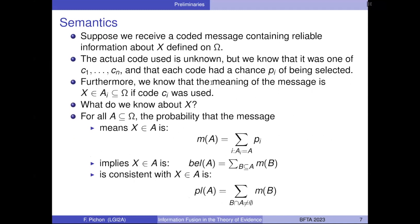Here is the semantics that Shafer gave in general to mass functions. Mass functions are obtained by fitting evidence to canonical examples of this form: suppose we receive a coded message telling some information about variable X in omega. The actual code used is unknown, but we know it was one of C1 to CN, that each code has a chance PI of being selected, and that the meaning of the message is X belongs to some subset AI if code CI was used. For any A, the total chance of the message meaning X belongs to A is the sum of the PIs for all i such that AI equals A. We think the message implies X belongs to A is the belief of A, and that it is consistent with X in A is the plausibility of A.